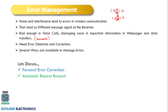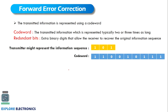Here let us discuss forward error correction as well as automatic repeat request methods to mitigate this error. In forward error correction we generate a codeword. If the information being transmitted is 3 bits, this 3-bit information will be converted into 9 bits by adding extra redundant bits. These redundant bits are required at the receiver to recover the information correctly. Using these redundant bits, the receiver will know what the sender actually sent.